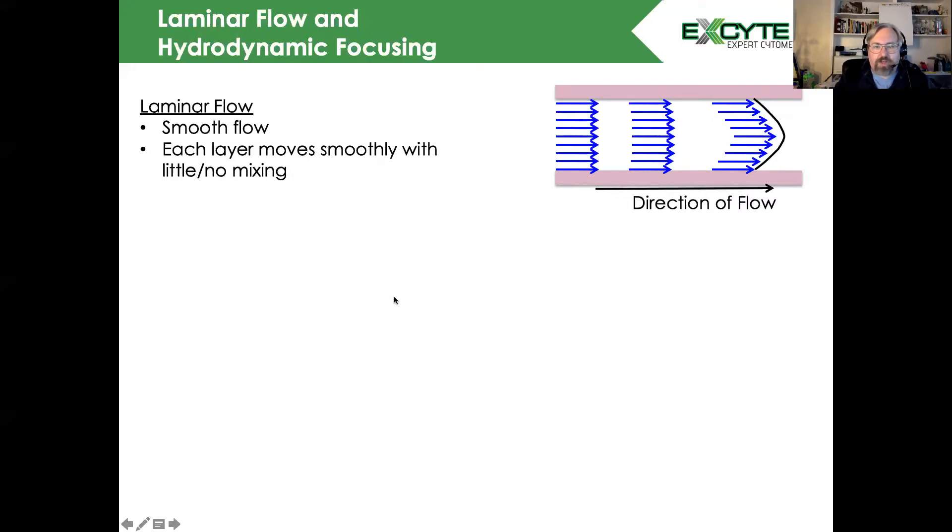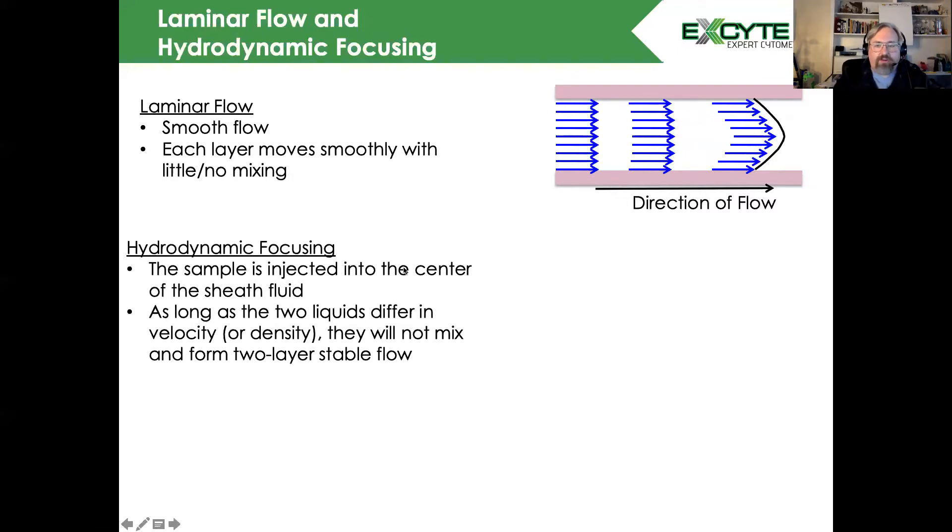Once we've established our laminar flow, we're going to hydrodynamically focus our samples by injecting them into the center of the stream at a slightly different pressure. That will allow the samples to stay within the laminar flow, keep them contained, and allow the cells to spread out along the velocity axis.